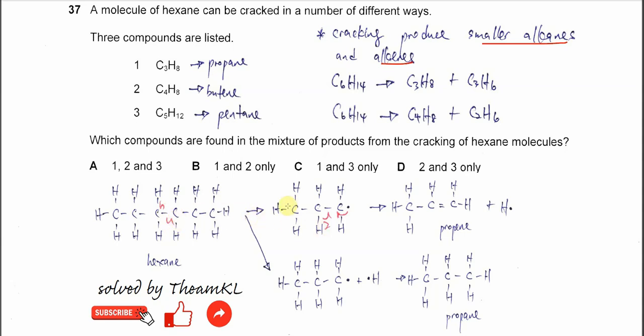Eventually it will produce the same radicals, this propyl radical. And the unpaired electrons here will move to the bonding and the C-H bond here will break homolytically.